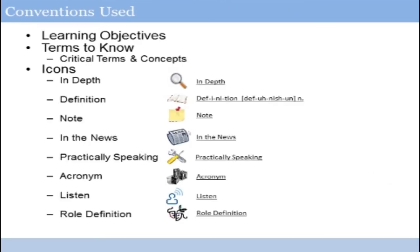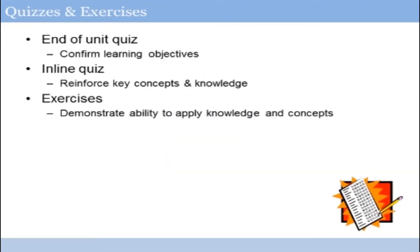One of the key tools at your disposal in this program is the ability to print a copy of your courseware to work alongside the course. The courseware uses consistent conventions throughout, including chapter learning objectives, key terms and concepts to know, and iconography used to call out examples in the text. Along the way, we'll include a series of examples and quizzes to help you confirm your knowledge of the learning objectives and reinforce key knowledge and skills within each section.